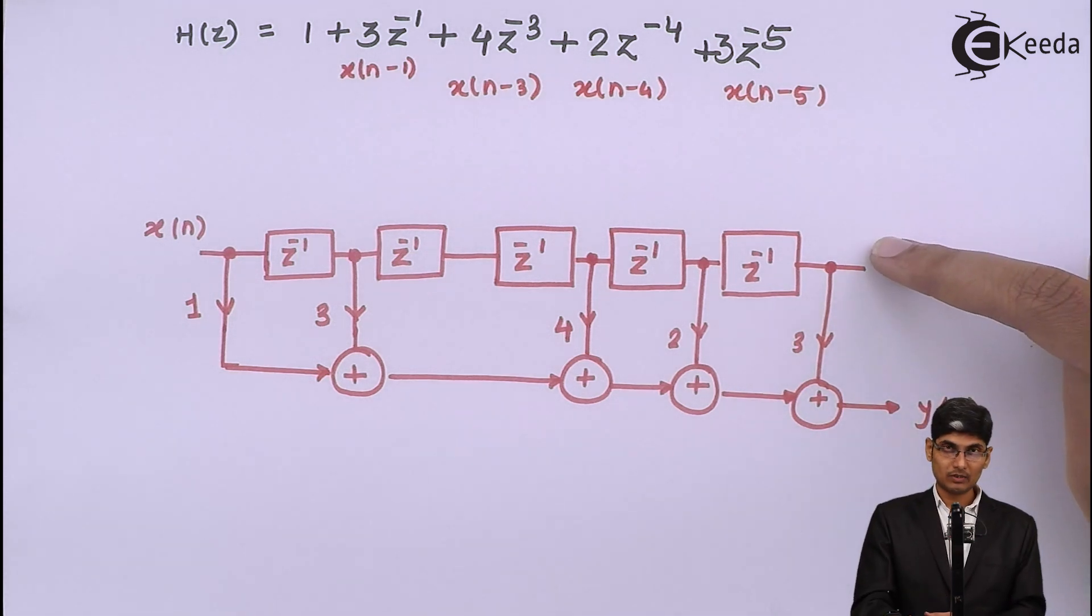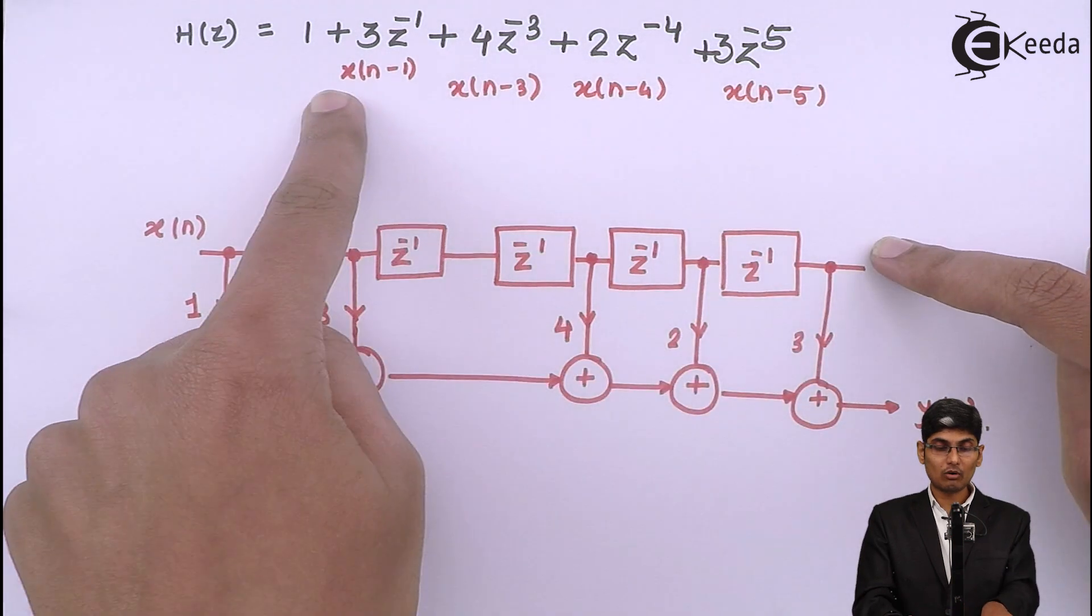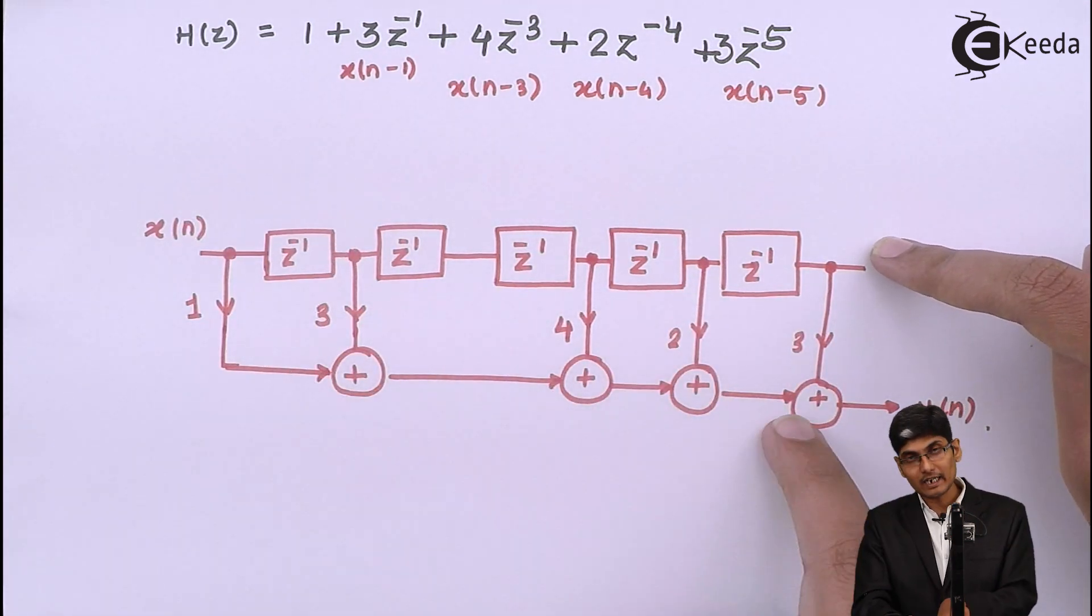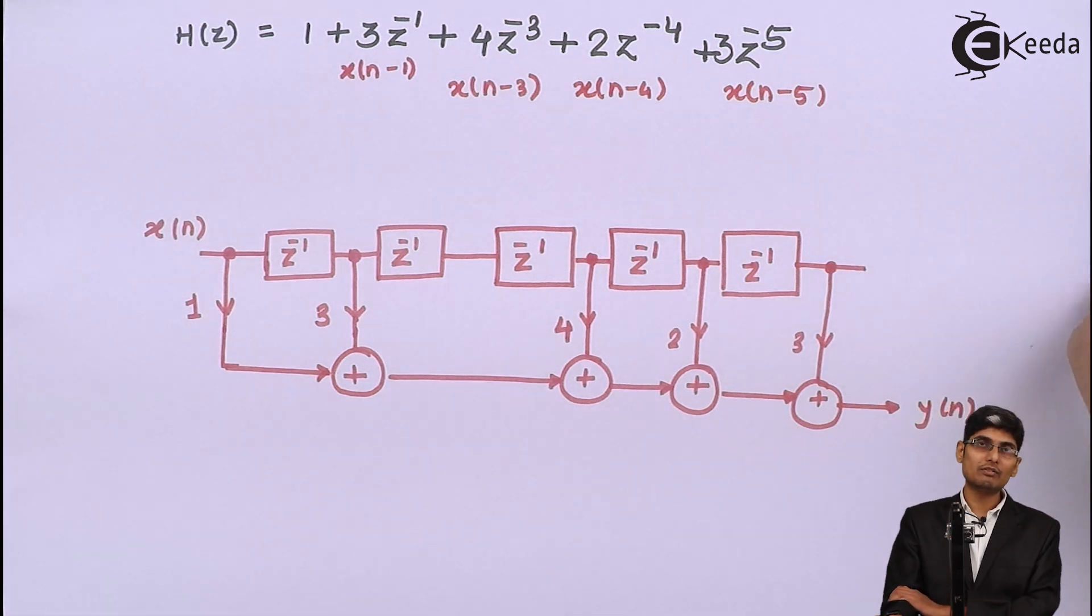Do not plug y(n) from here. Y(n) is addition of all the delays. So when I plug them, multiply them, then add them and I will get y(n).